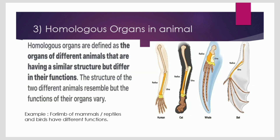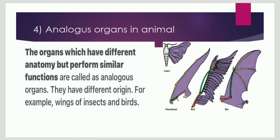Homologous organs in animals are defined as organs of different animals that have a similar structure but different functions. The structure of two different animals resembles, but the functions of their organs vary. For example, forelimbs of mammals, reptiles and birds have different functions. Analogous organs in animals have different anatomy but similar functions — for example, wings of insects and birds have the same function but are anatomically different.